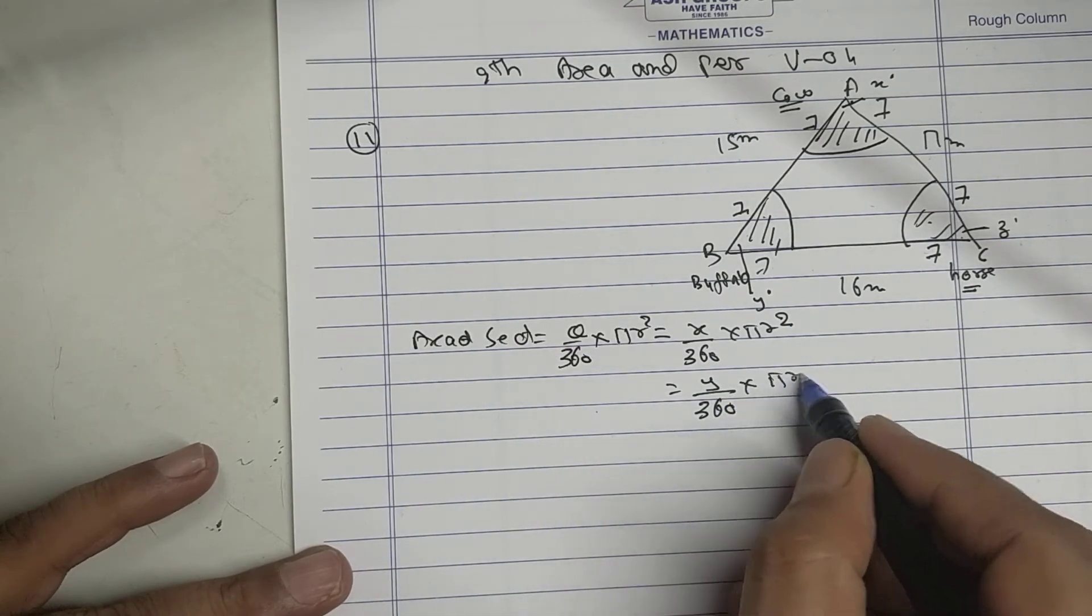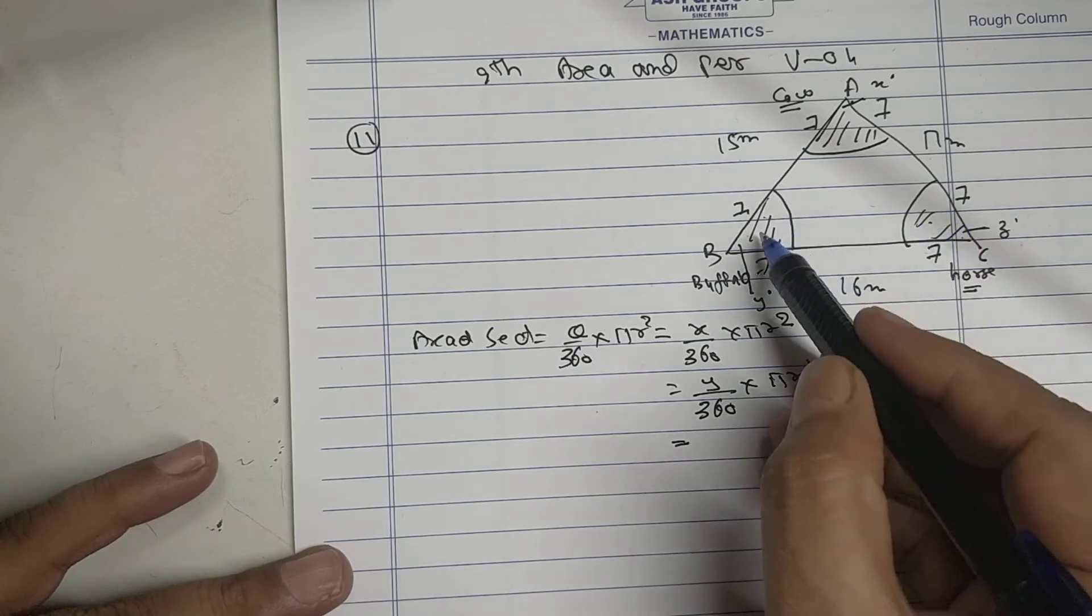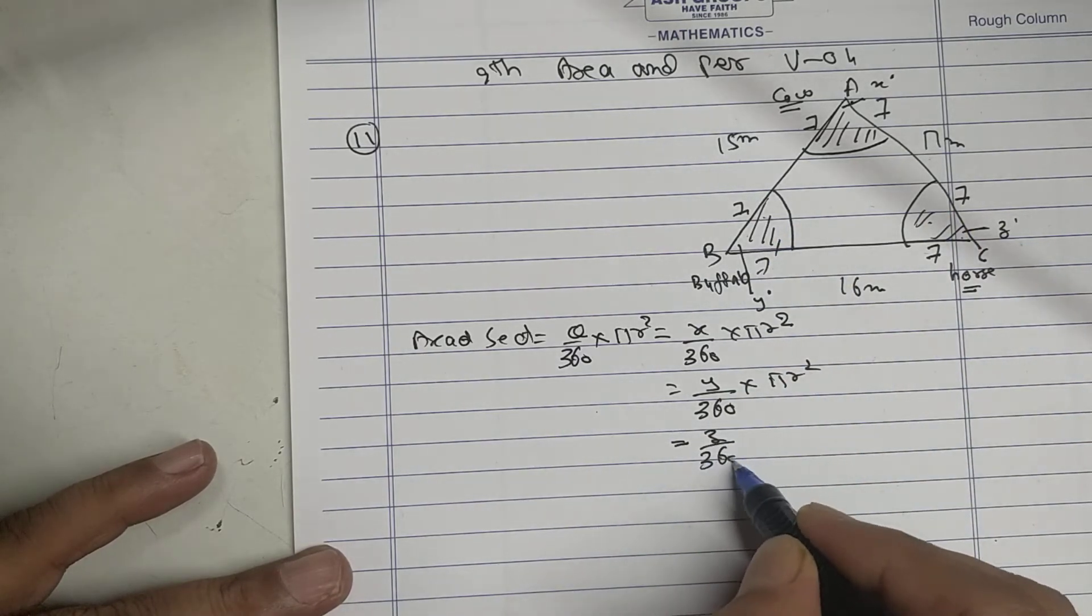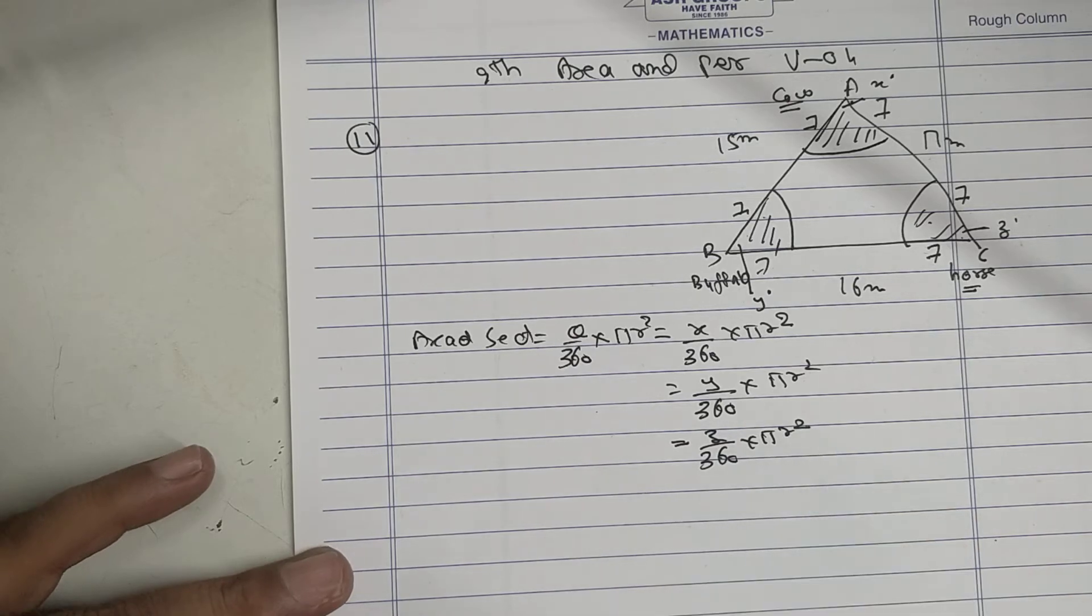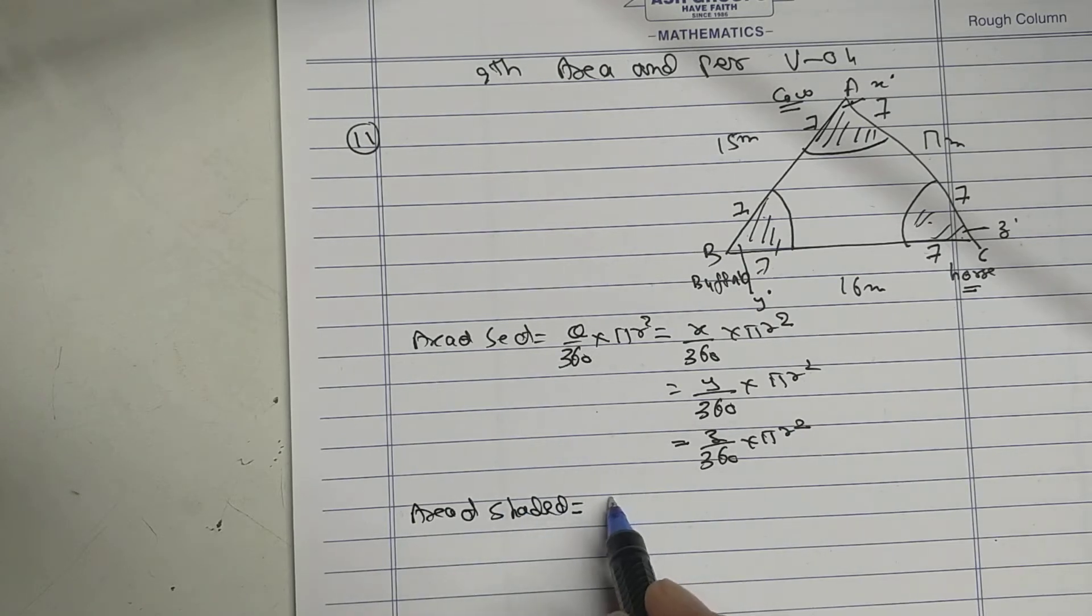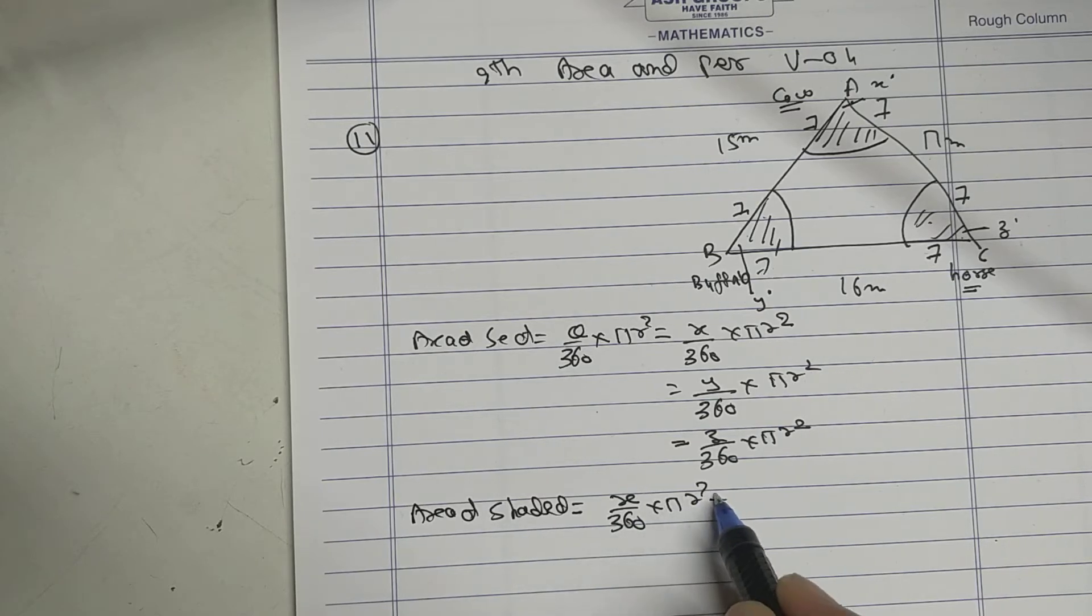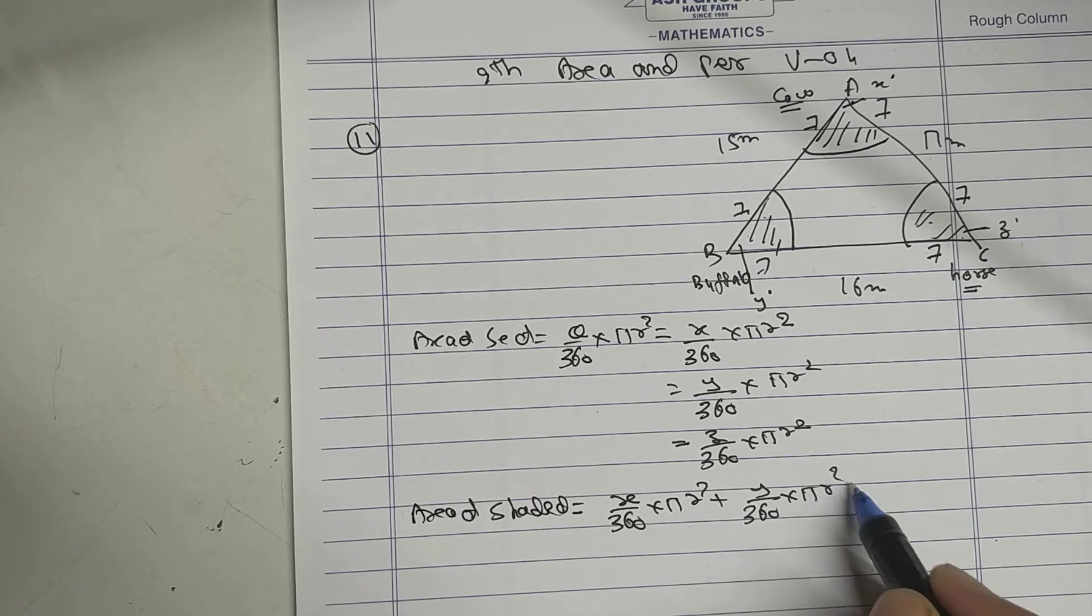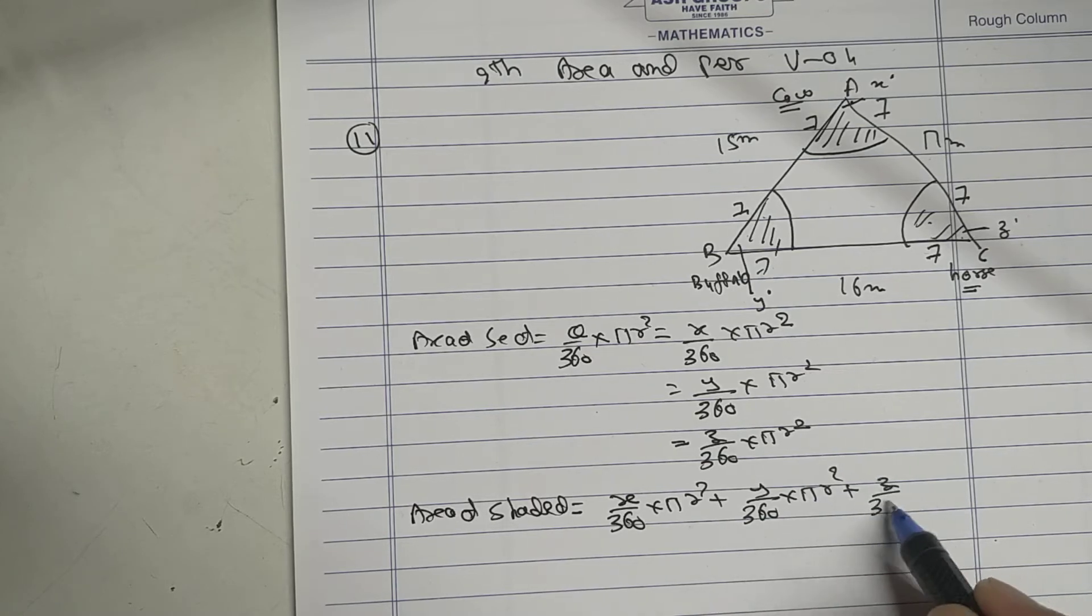So area of shaded region is x/360 × πr² plus y/360 × πr² plus z/360 × πr².